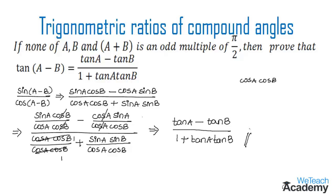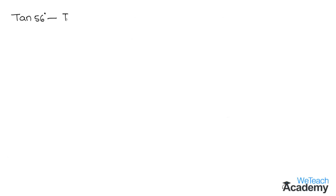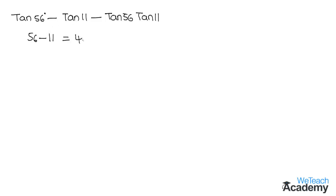Now let us proceed and discuss an example on this formula. The given example is: find the value of tan 56 degrees minus tan 11 degrees minus tan 56 degrees into tan 11 degrees. We have the angles 56 degrees and 11 degrees, so let us subtract them: 56 degrees minus 11 degrees equals 45 degrees.